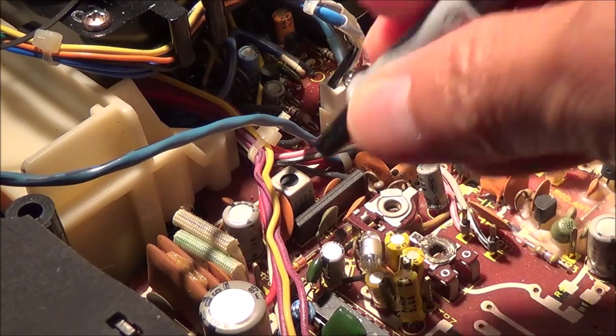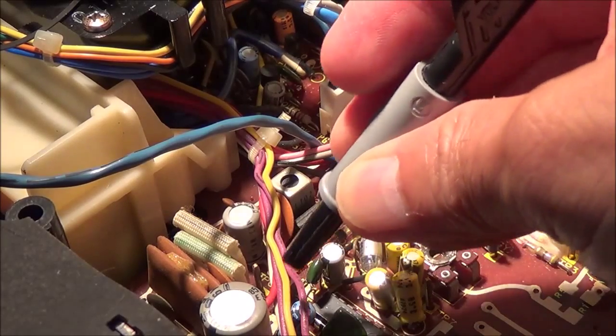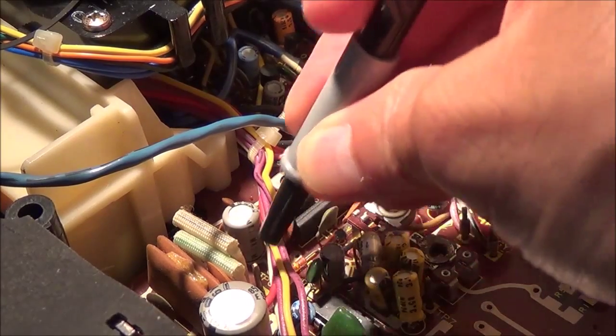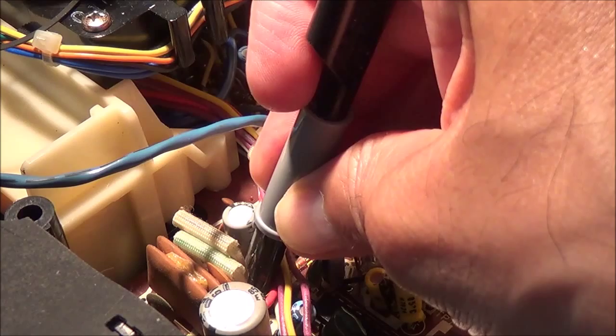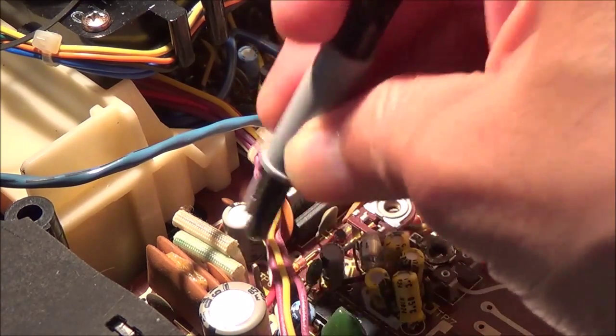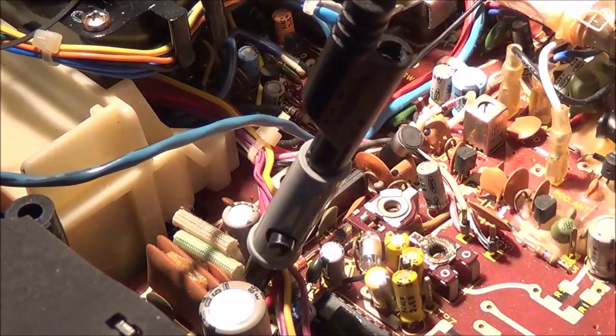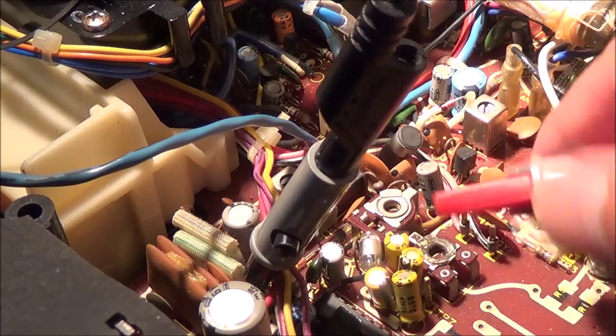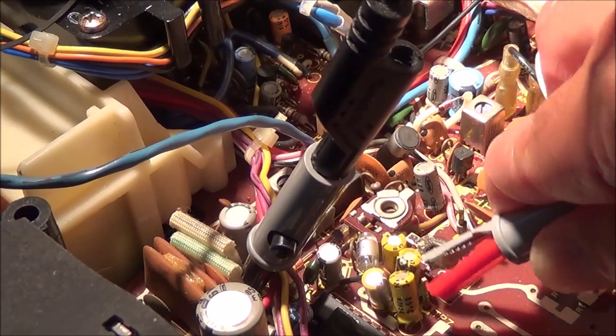I'm going to hook up the ground of the frequency meter, the frequency meter part of my digital multimeter, to TP6 here, test point six. And the other one that I need to hook up to is here at TP7. Okay, I'm going to go ahead and turn everything on.